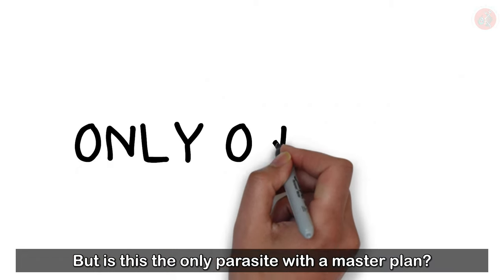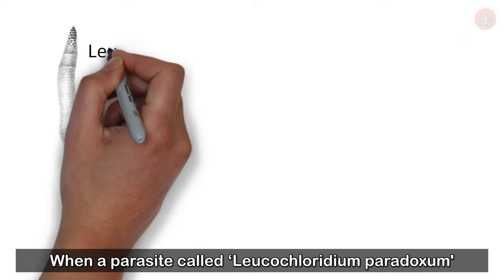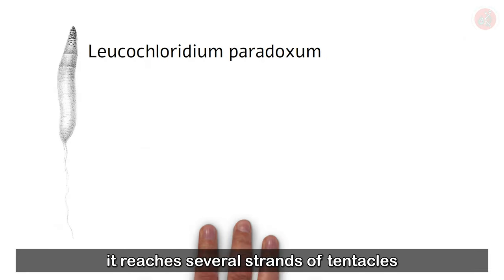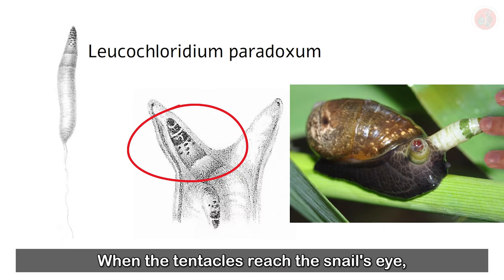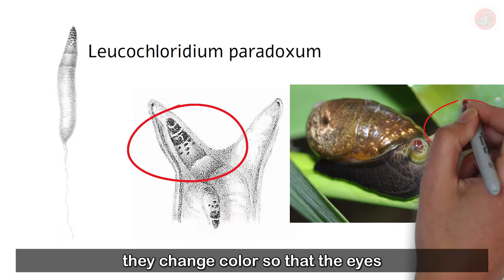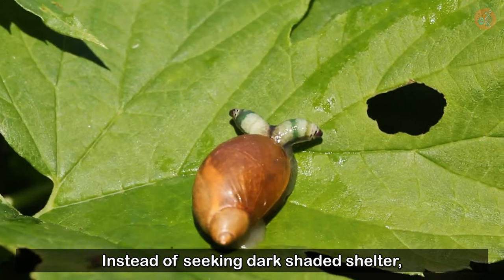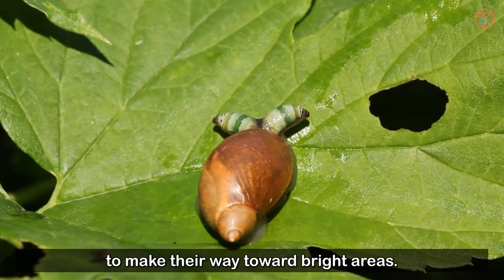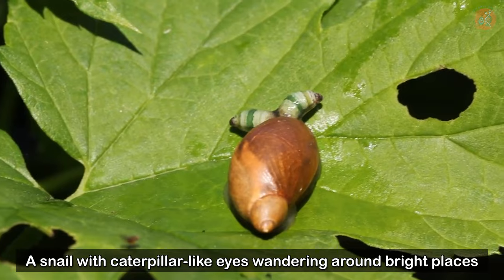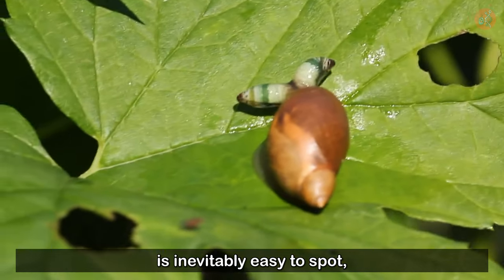But is this the only parasite with a master plan? When a parasite called Leucochloridium paradoxum enters a snail's body, it reaches several strands of tentacles toward the snail's eyes. When the tentacles reach the snail's eye, they change colors so that the eyes look like a tasty green caterpillar. Instead of seeking dark shaded shelter, snails infected with this parasite will try to make their way toward bright areas. A snail with caterpillar-like eyes wandering around bright places is inevitably easy to spot.